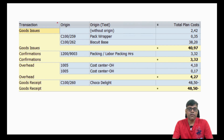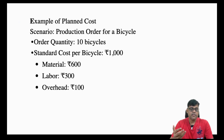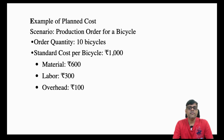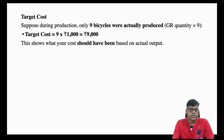Now coming to the next cost calculation — target cost. Suppose during production we are going to manufacture 9 bicycles instead of the planned 10. We process goods receipt for 9 bicycles. Our standard cost was 1000 per bicycle, so the target cost for 9 bicycles is 9000. Target cost is calculated on the basis of your actual output quantity.